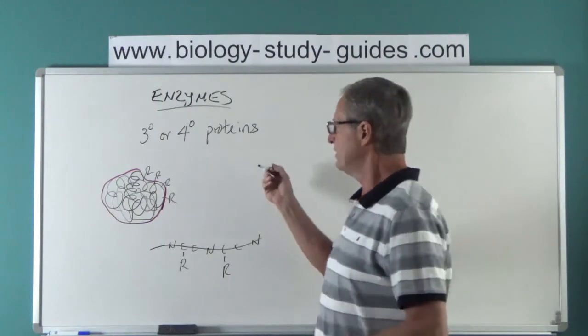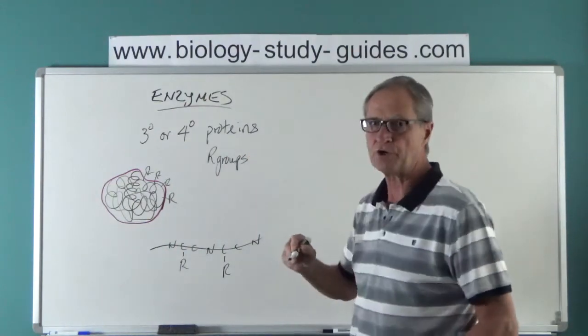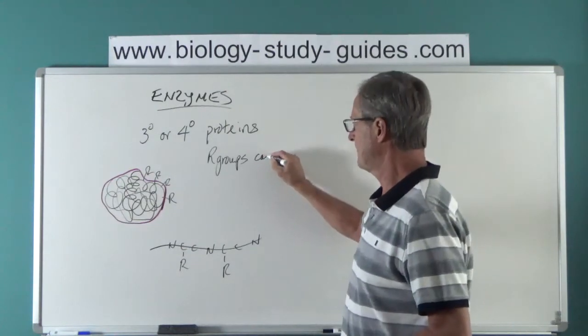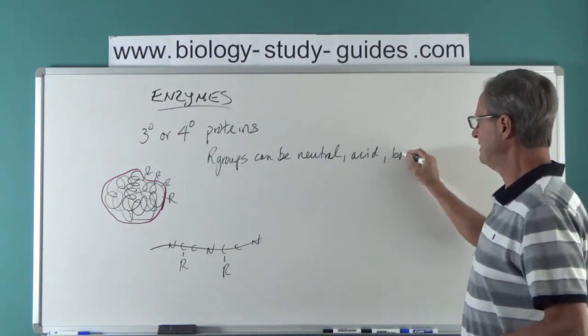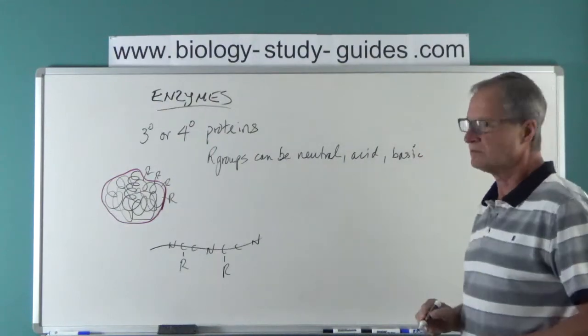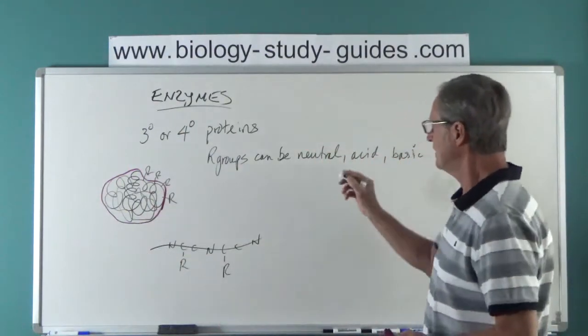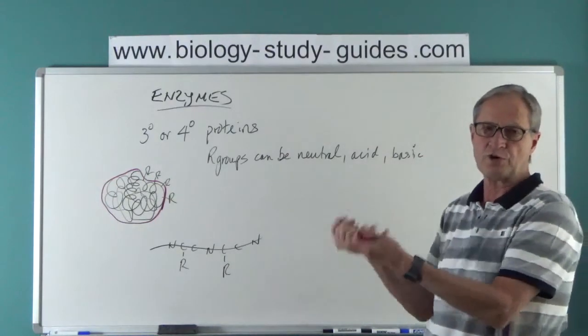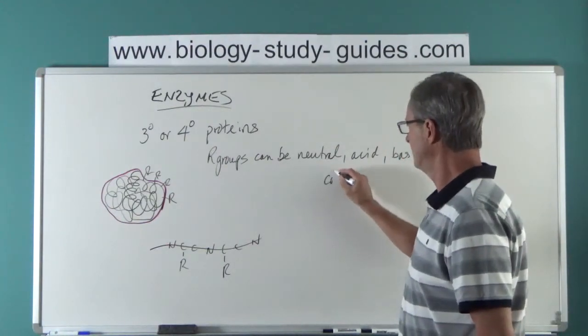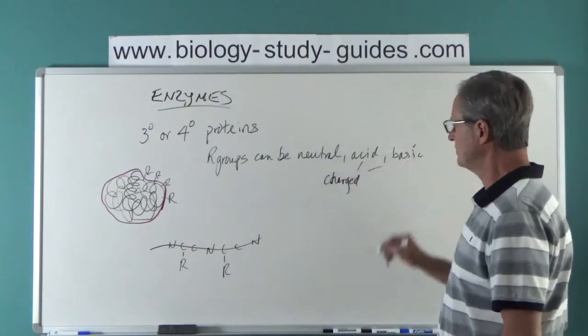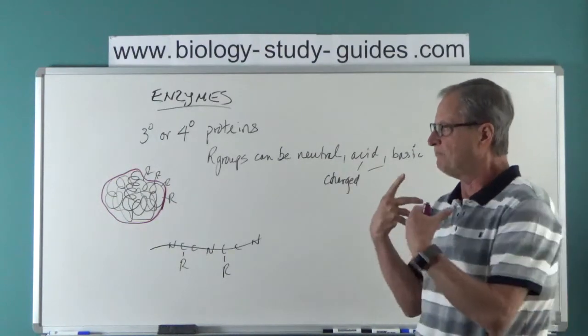The R groups are extending out, so we have R groups here, there, all the way along. There's a certain chemistry to the surfaces of this thing, and it's the chemistry of the R groups that determines what the enzyme does. The R groups can be neutral, acidic, or basic. They can be acidic in that the R group has a tendency to donate hydrogens, neutral so they don't, or basic with a tendency to accept hydrogens or donate hydroxide ions. They can be charged in other ways. That's the key thing to understanding the basis for it.